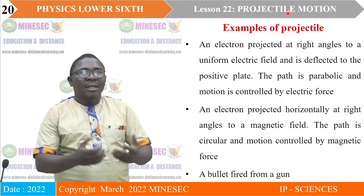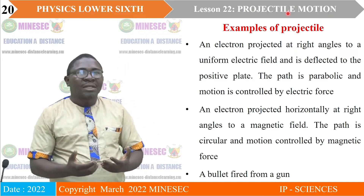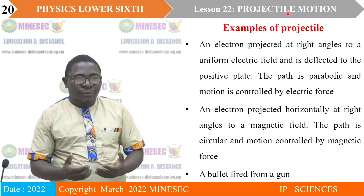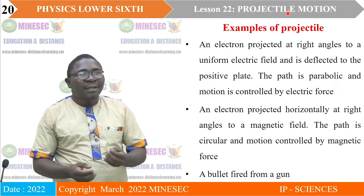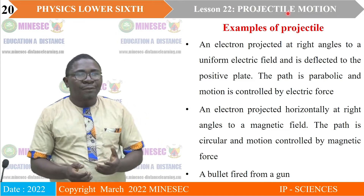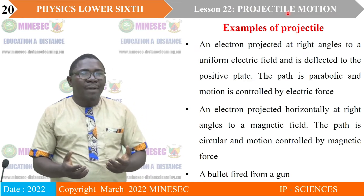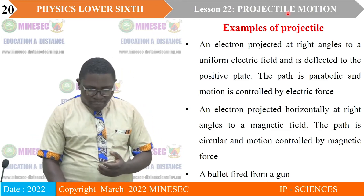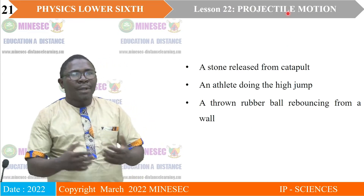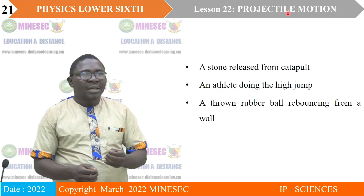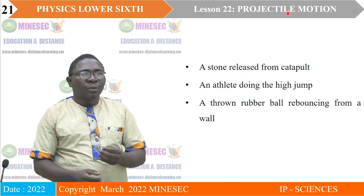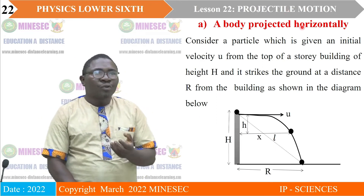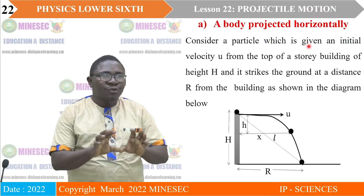Examples of projectiles: an electron projected at right angles to a uniform electric field — its path is parabolic and motion controlled by electric force. An electron projected horizontally at right angles to a magnetic field — the path is circular and motion controlled by magnetic forces. Also: a bullet fired from a gun, a stone released from a catapult, an athlete doing high jump, and a thrown rubber ball rebounding from a wall.